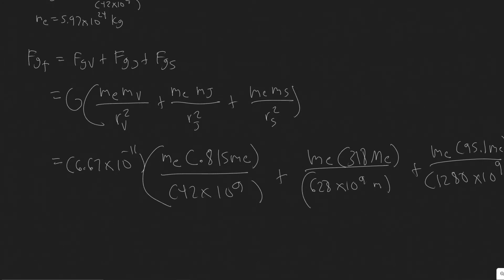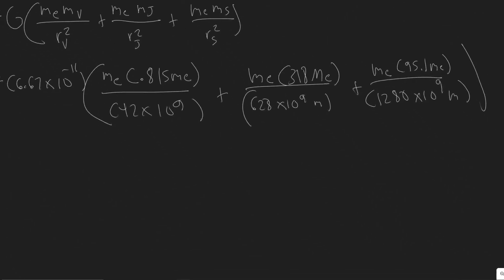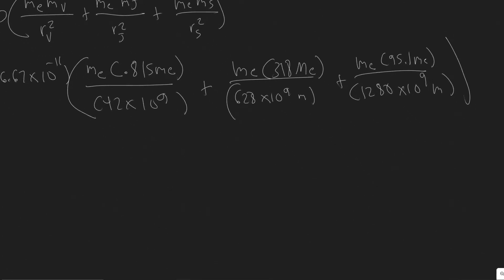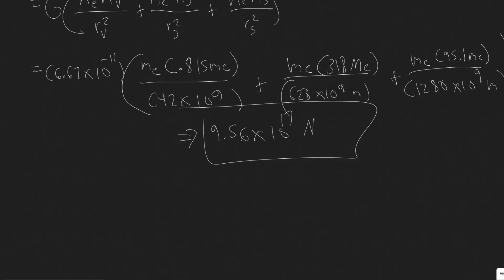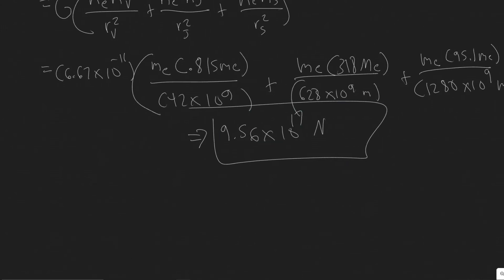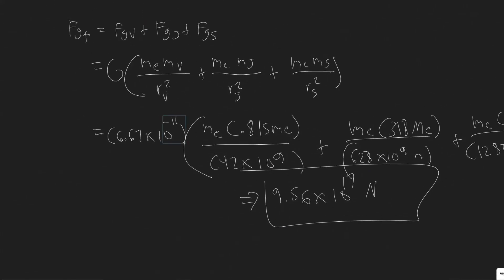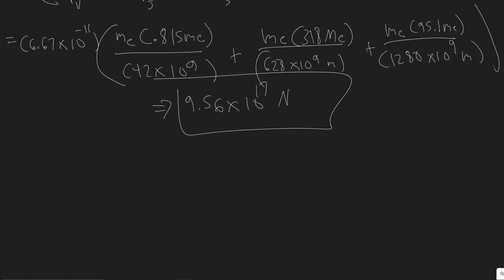Now with all three terms set up, you add them together and plug in the mass of the Earth (5.97 × 10²⁴ kg). When you plug in all the numbers, you get a total force of 9.56 × 10¹⁷ Newtons. This is the total gravitational force on Earth due to Venus, Jupiter, and Saturn combined.